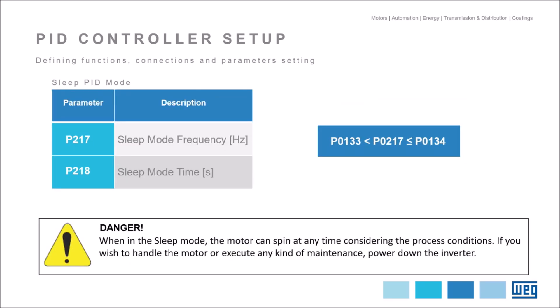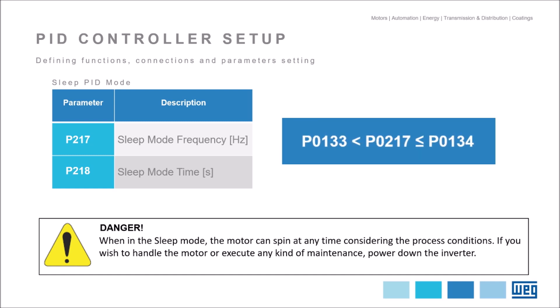In some applications such as pumps, the inverter has a feature that can reduce power consumption even more. It is called the sleep function, which shuts down the motor at low speeds when there is no need for the motor to maintain the process variable stable. This function is enabled by setting P217 (sleeping frequency) and P218 (sleeping time). When the motor operates at a frequency below the value set in P217 for longer than the time defined in P218, the motor will stop. On a pump, when the pressure drops below the set point value, the motor will restart. Note that P217 must be adjusted within the maximum and minimum frequency limits.